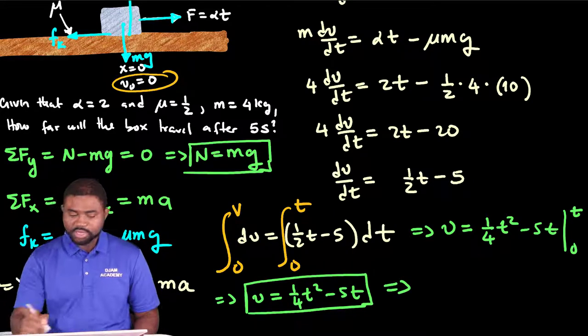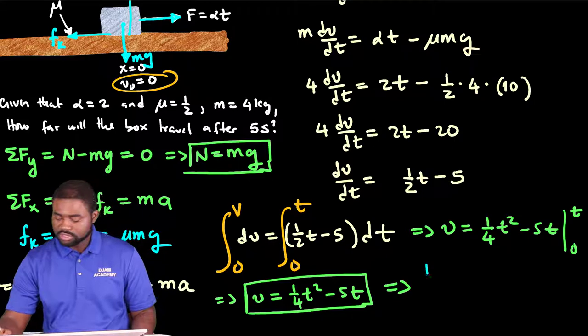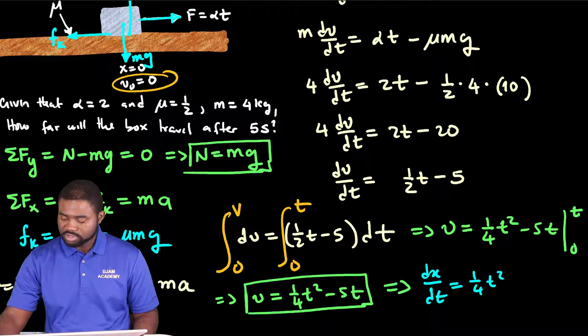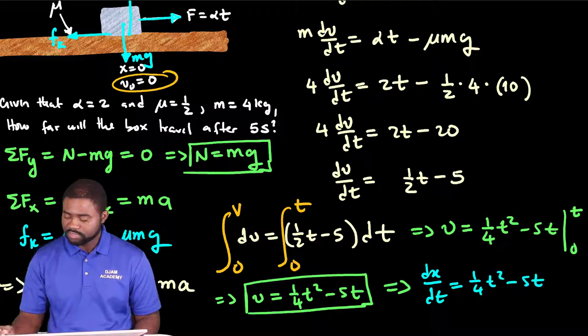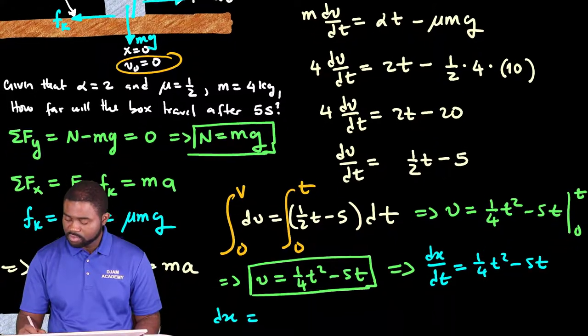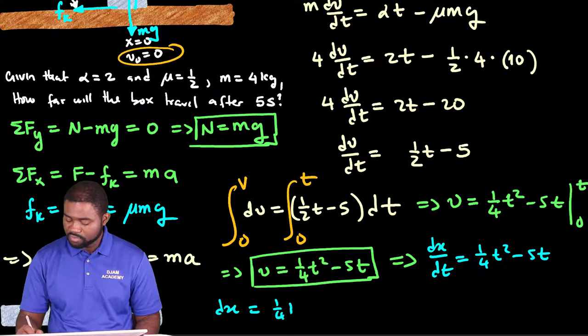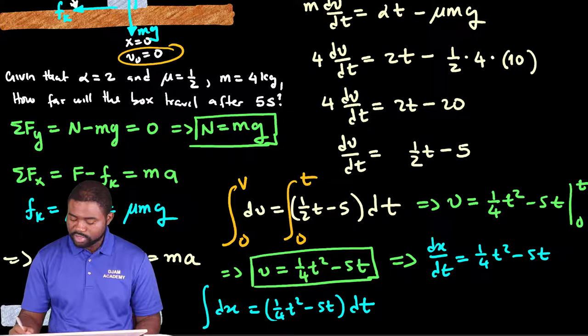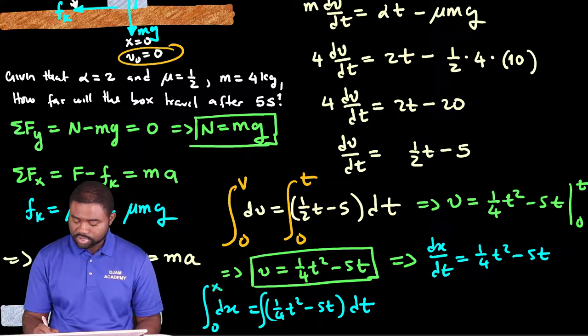Now, this would imply that Dx over Dt is equal to 1 over 4 T squared minus 5T, which means that Dx is equal to 1 over 4 T squared minus 5T, all multiplied by Dt.